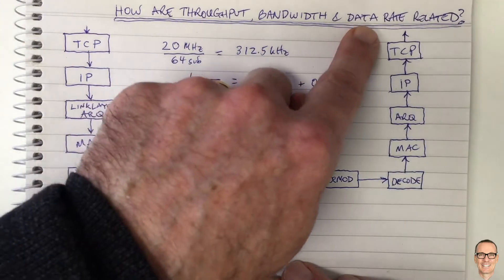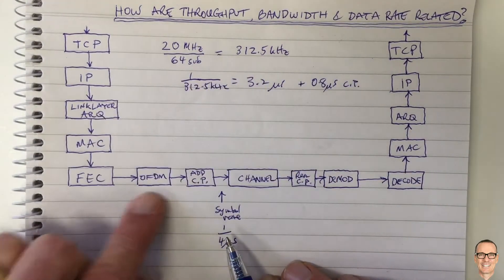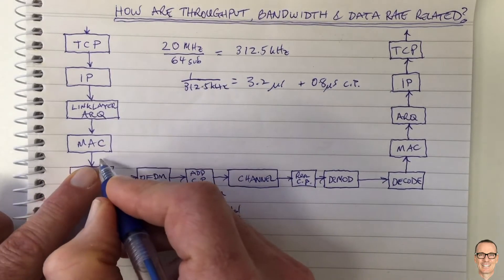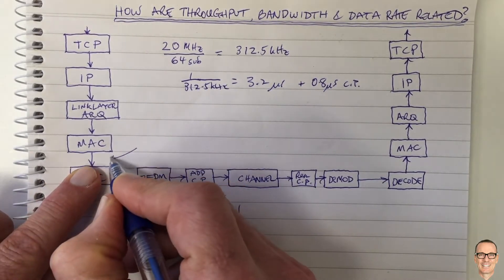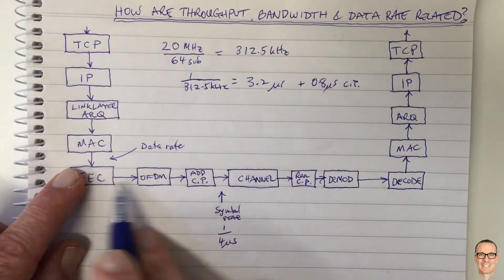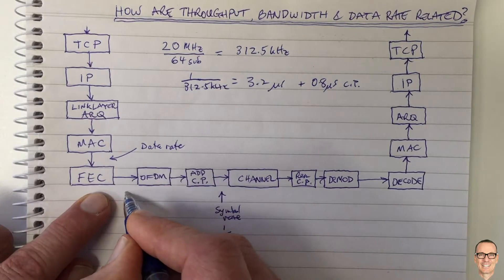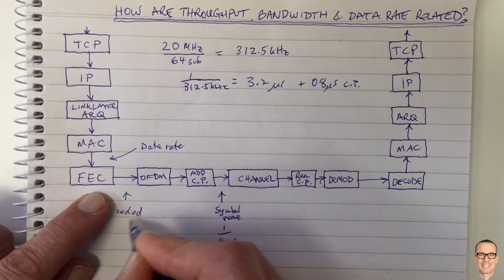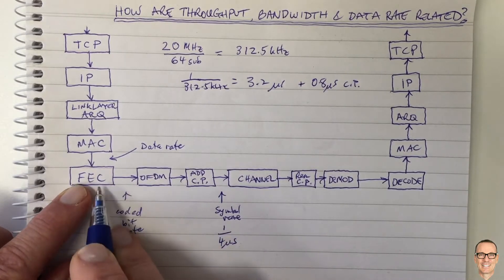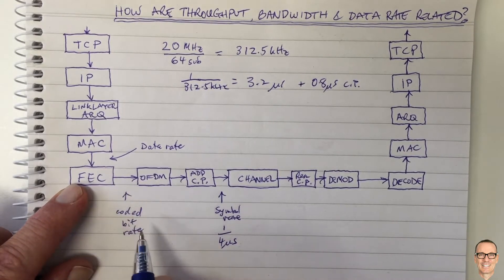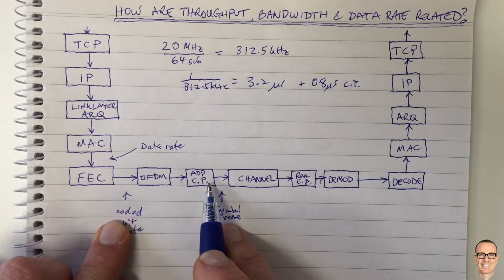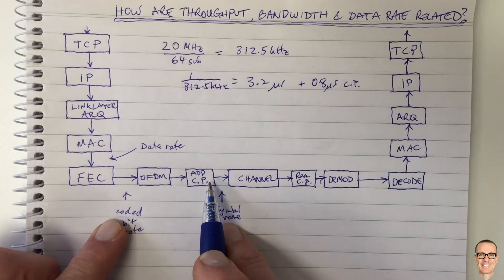What do we call our data rate? The data rate is at the point after the forward error correction — before that we call it the coded bit rate, because we add extra bits for redundancy in forward error correction coding. Those coded bits are the ones put into the OFDM modulator. That's an important distinction to know.